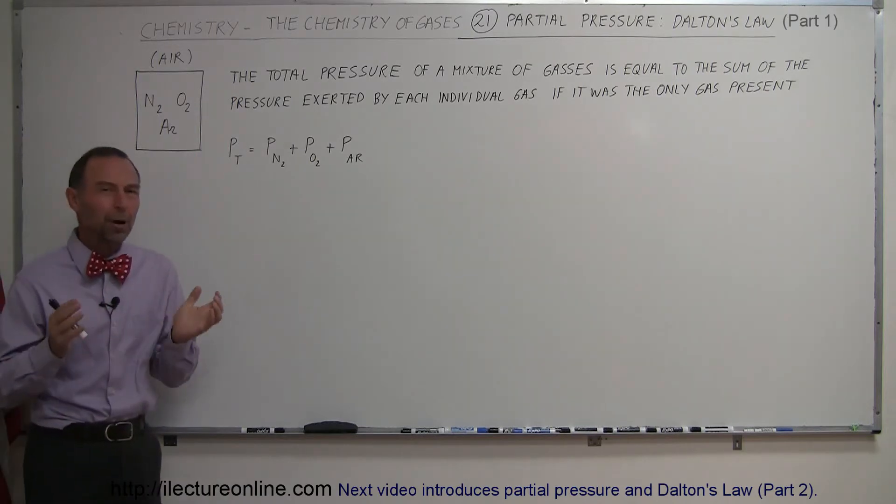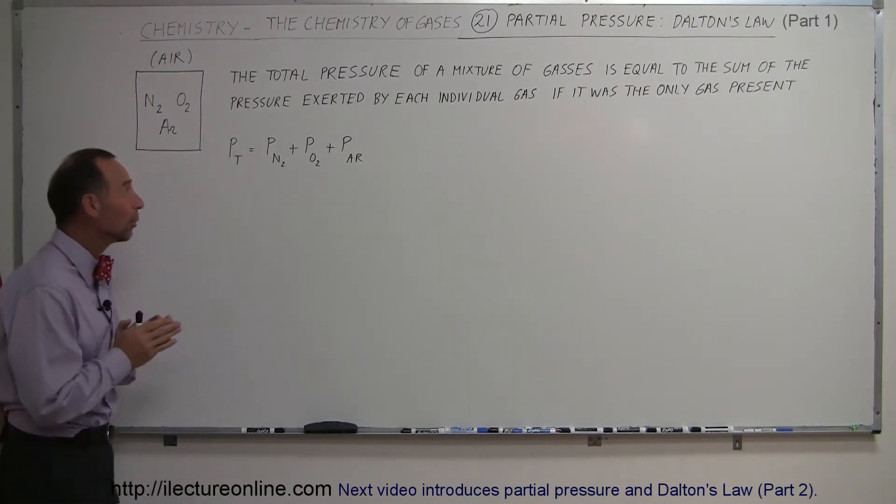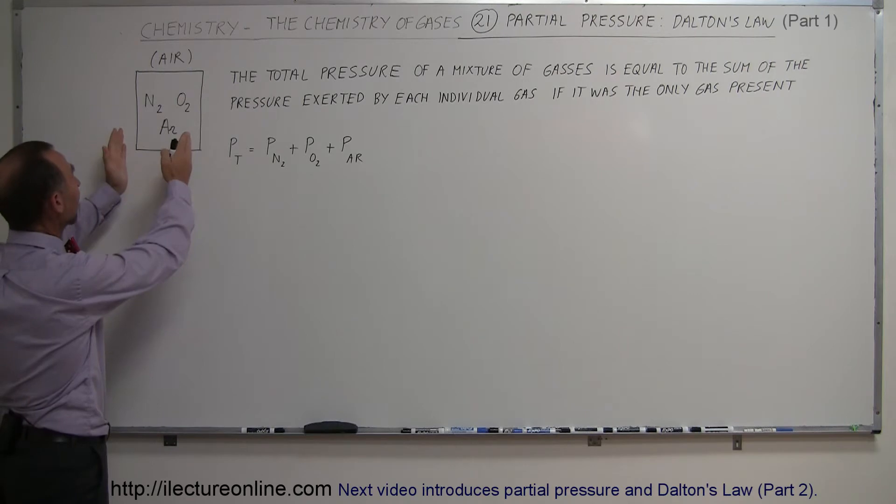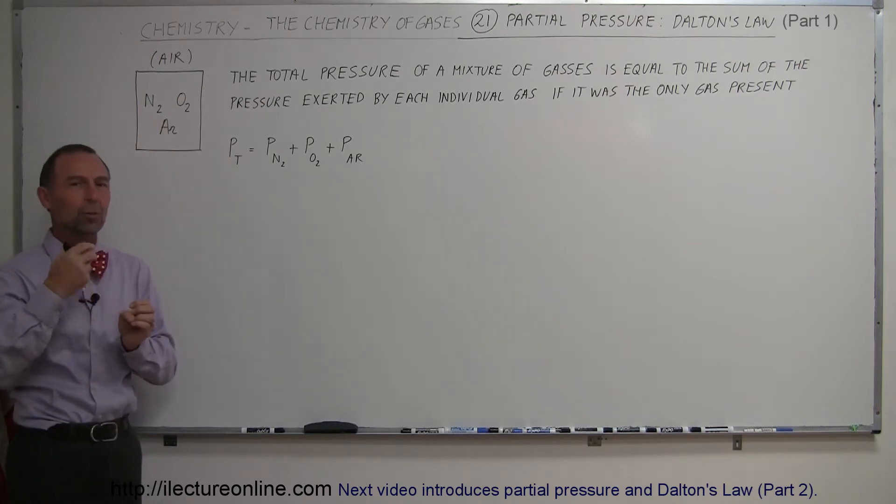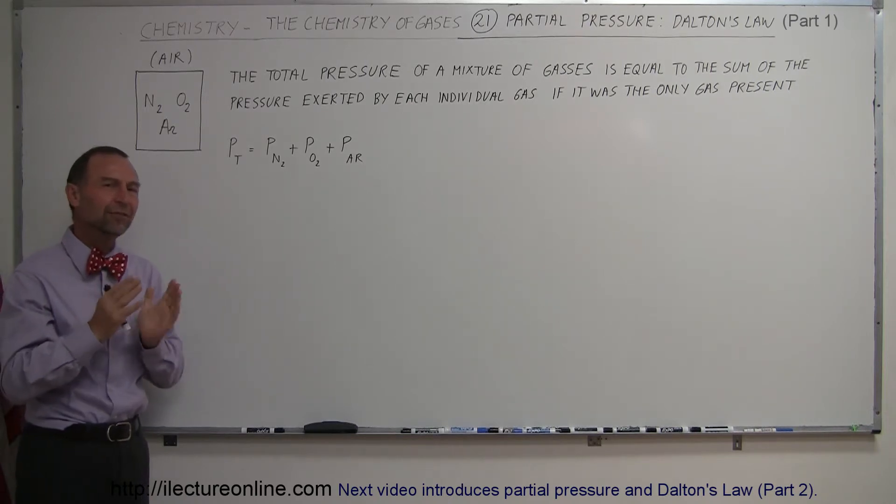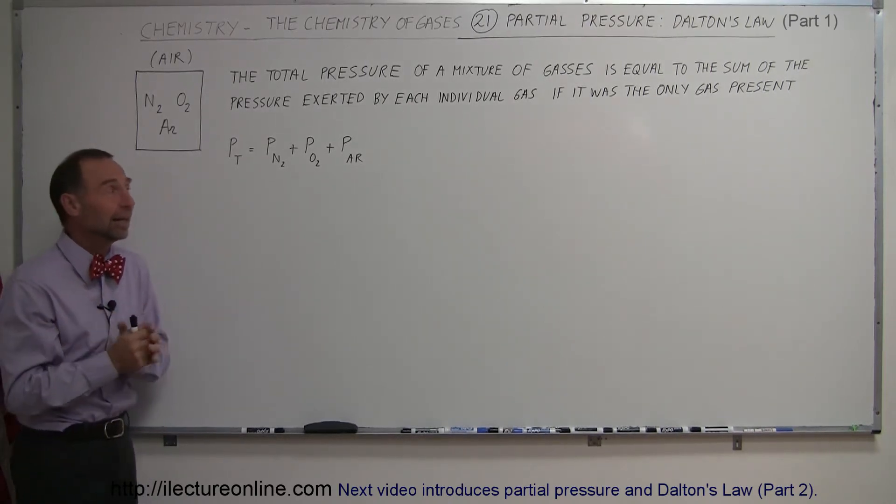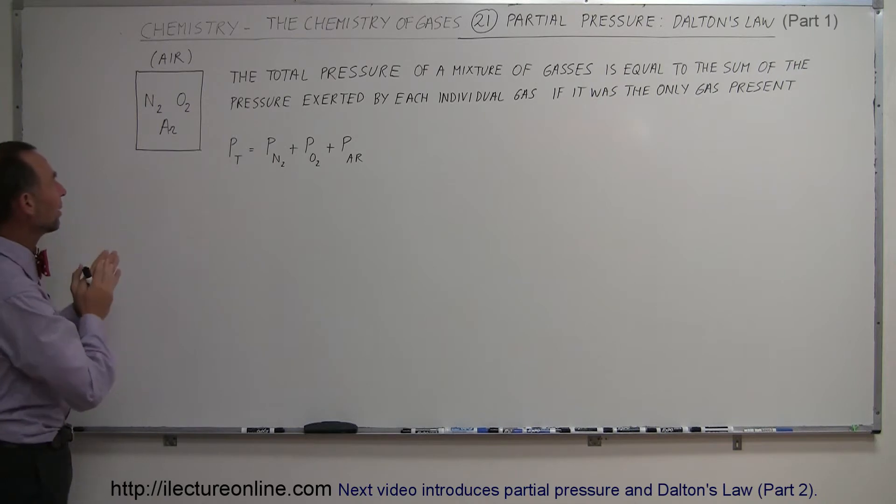So what do we mean by partial pressure of gases? Well, let's say that we have a mixture of gases. Air is a really good example, and let's take dry air, because normally air has some water vapor in there that has different amounts depending upon the humidity in the air. So let's just assume dry air.